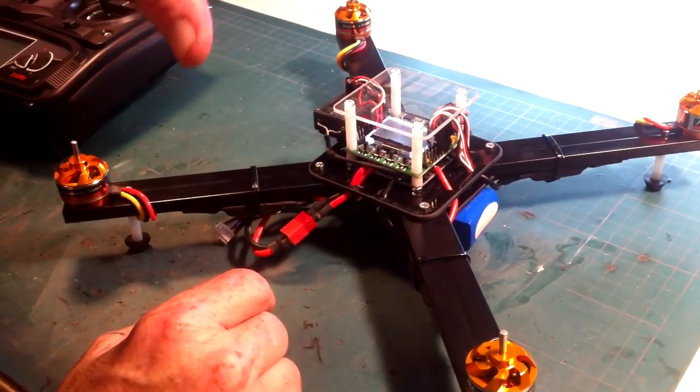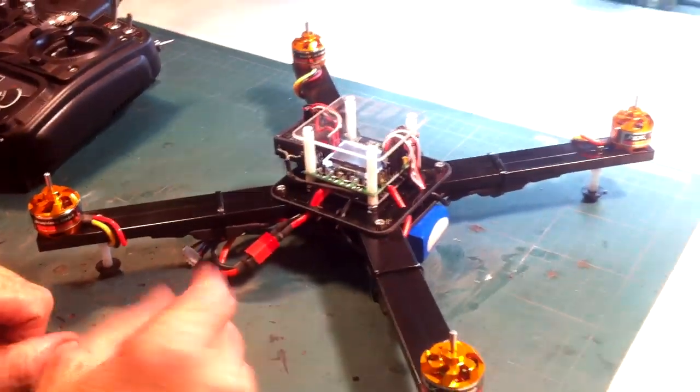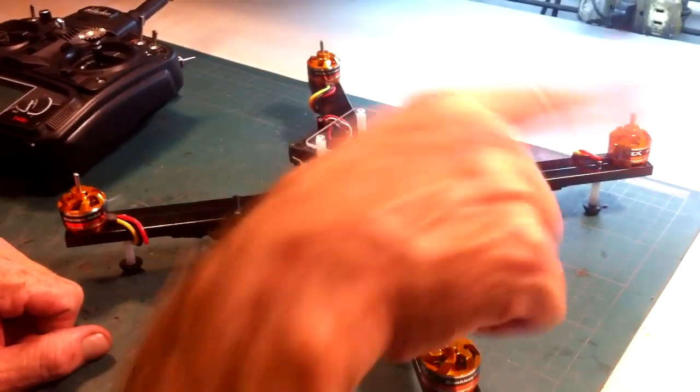And once you choose that there'll be a little diagram shown on the screen showing you which motor is number one, two, three, and four, and it's also showing you which way the propeller is supposed to turn or which way the motor is supposed to turn.